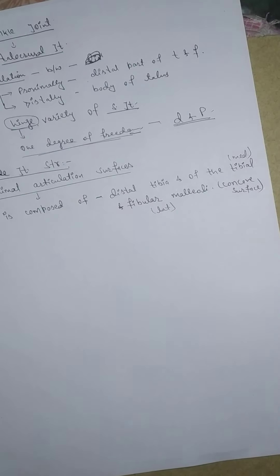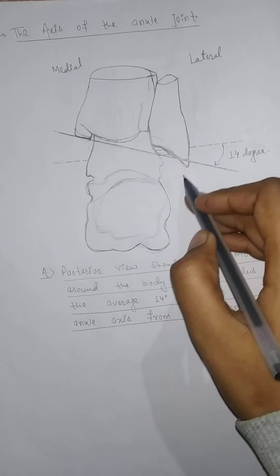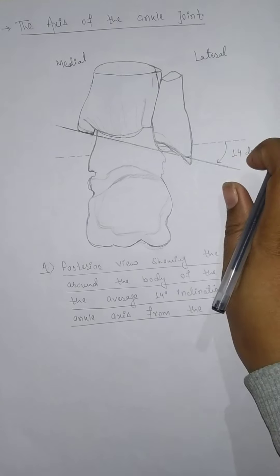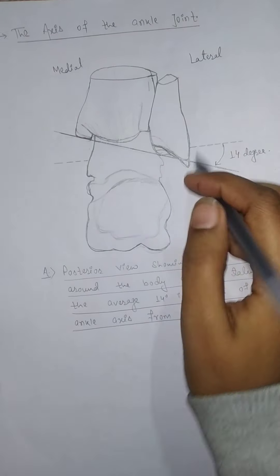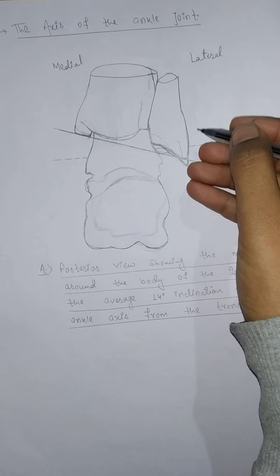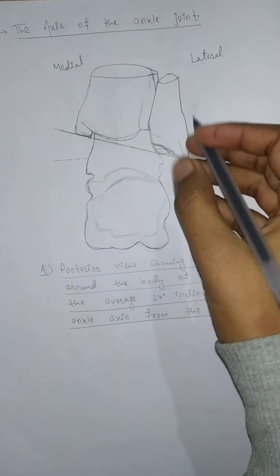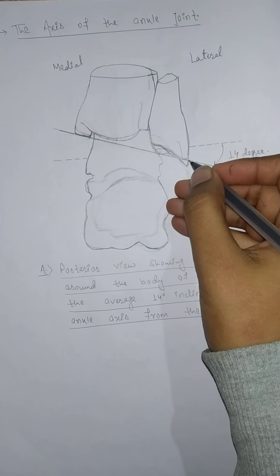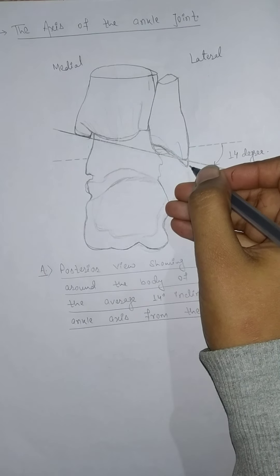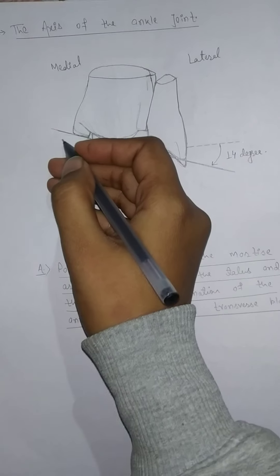As you can see in this diagram — this is a posterior view — the fibular part on the lateral side extends more distally compared to the medial tibial side.